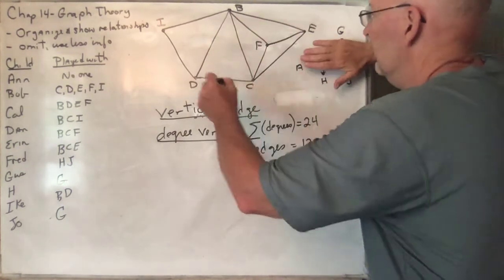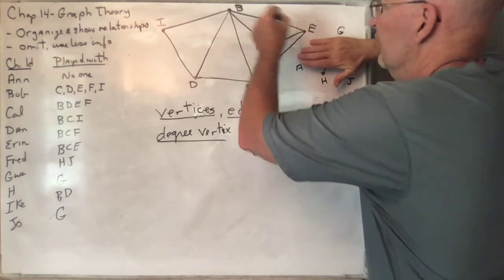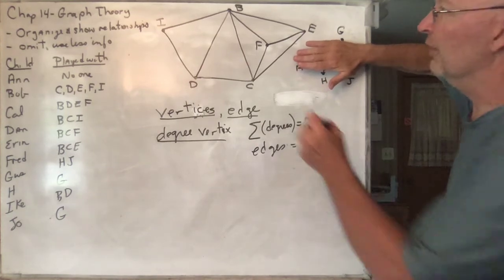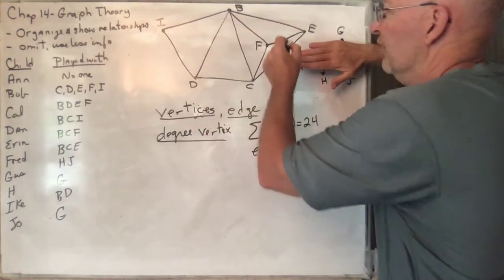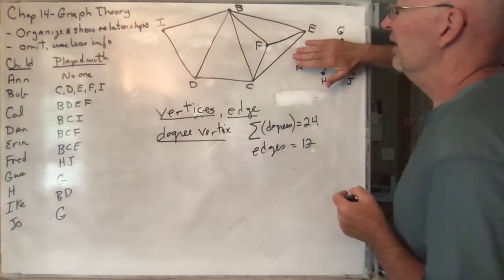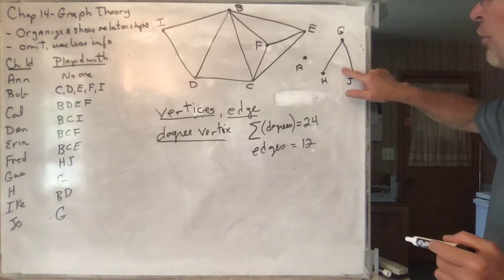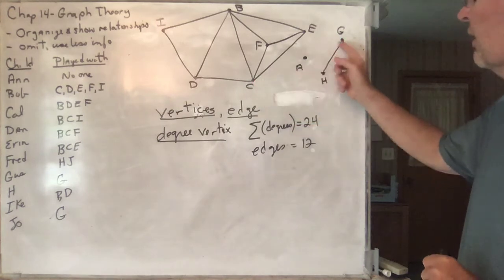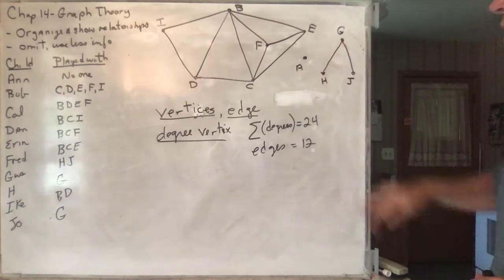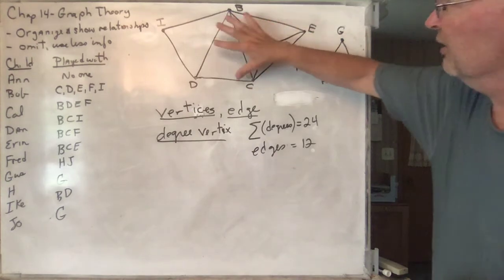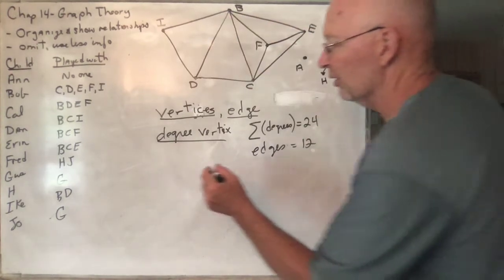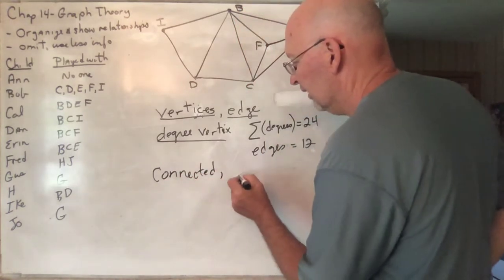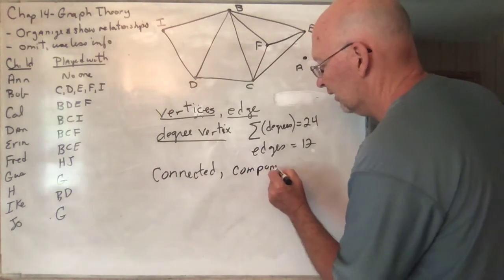If we just had this main cluster, that would be said to be a connected graph, because from every vertex you can get to every other vertex. Given that the graph includes other separate pieces as well, we say the graph is disconnected — because you can't get from here to there. If it is disconnected, then each one of the connected portions is called a component.